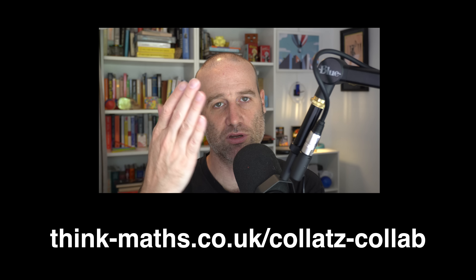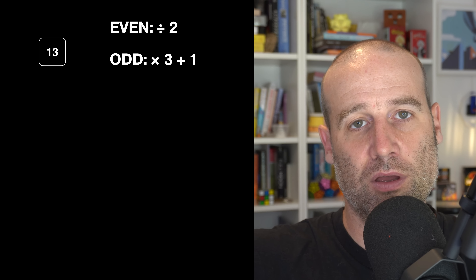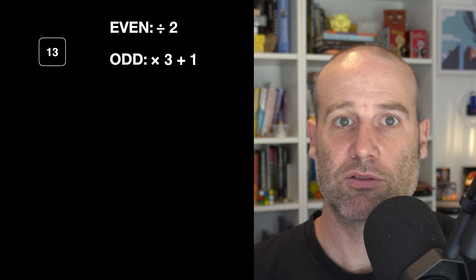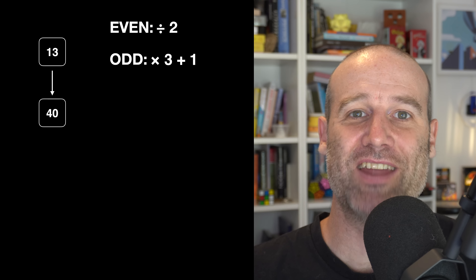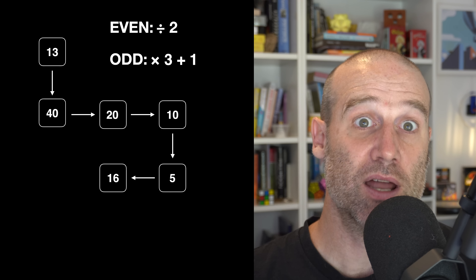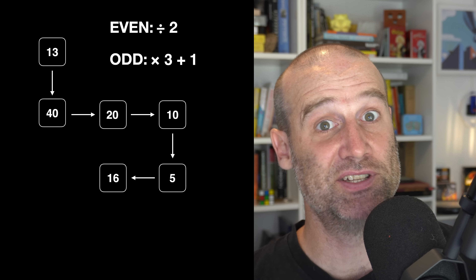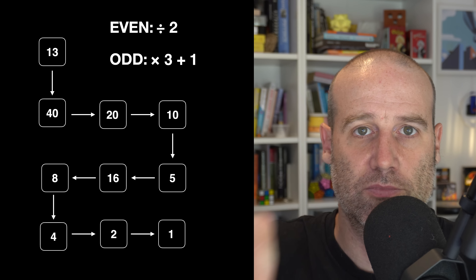In short, it's an algorithm that you apply to a number and you see what happens. So let's say you start with the number 13. The rules are: if it's even, you half it; if it's odd, you can't half it, so you multiply by 3 and add 1. Weird rules — don't question them, they're just the rules. The point is they're very simple. So 13 is not even: multiply by 3 to get 39, add 1 to get 40. Now we're in even territory — half of that is 20, half is 10, half is 5. Back to odds, so multiply by 3 to get 15, add 1 to get 16.